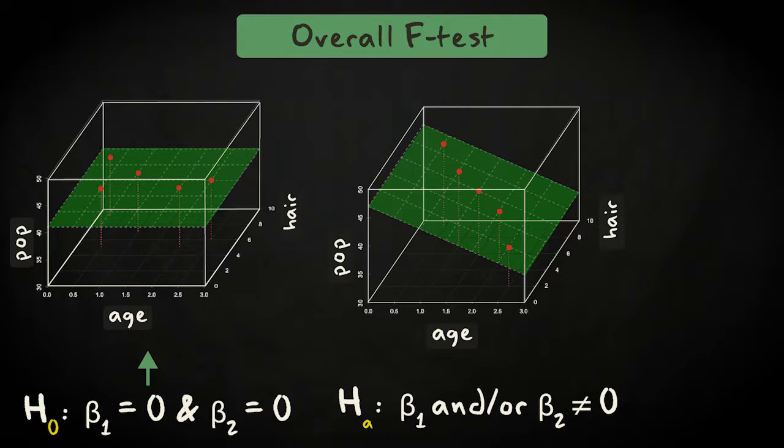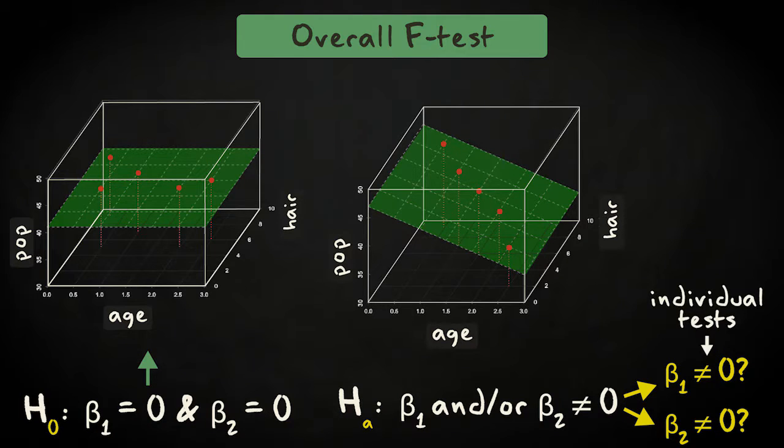This alternative hypothesis is very general. If there is a relation between the set of predictors and the response variable, we still don't know which predictors contribute. To find out which predictors contribute, we'll follow up with individual tests of the regression coefficients later on. But for now, we'll focus on the overall test.